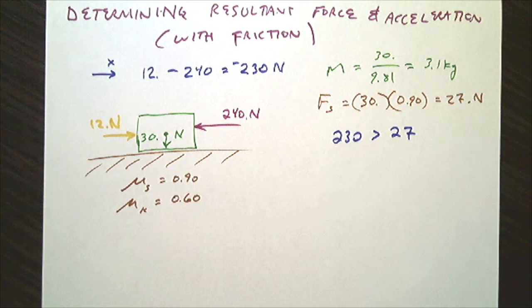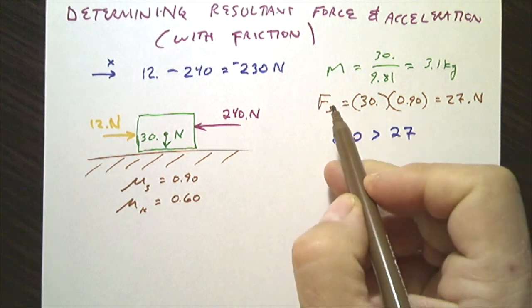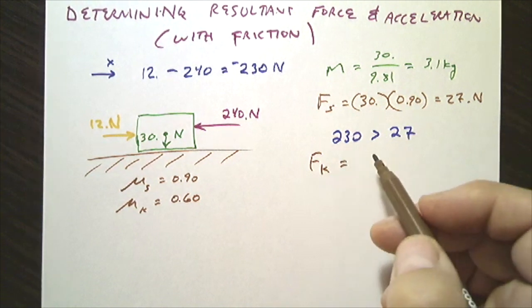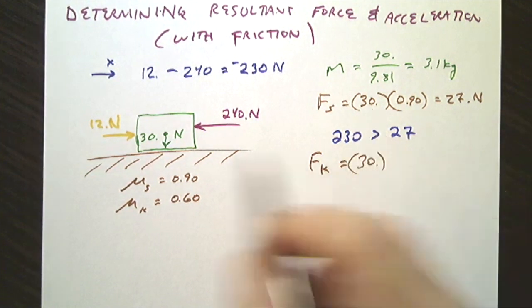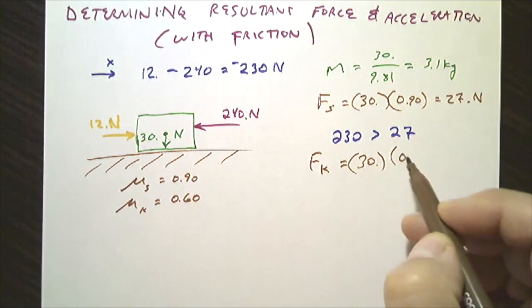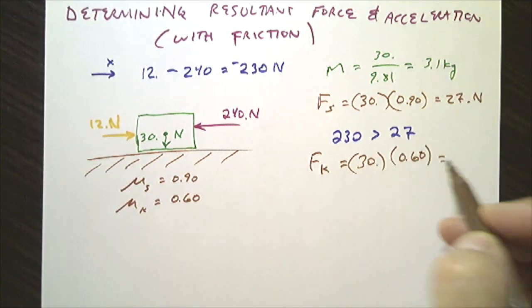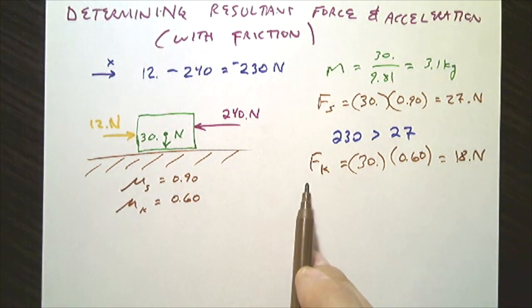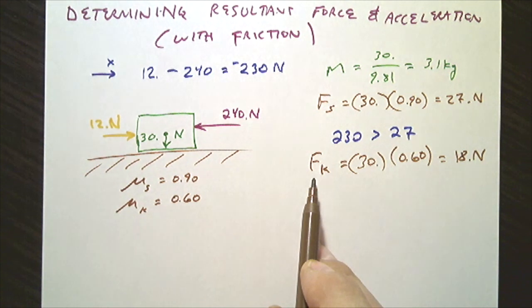So to determine now the movement, because it does move, I don't need the static friction force, but the kinetic friction force. So that would be 30, the same normal force, times the coefficient of kinetic friction, 0.60, and that would give me 18 newtons. There is less frictional force with kinetic than there is with static.